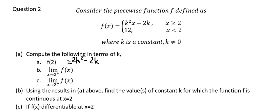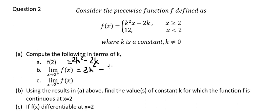Question b: we need to find the limit as x approaches two from the right. From the right, that corresponds to this piece of the function, because this value is greater than two, so it is on the right side. We put two in here and we get 2k squared minus 2k.